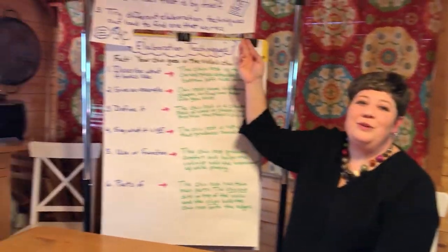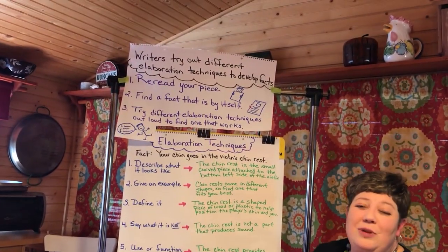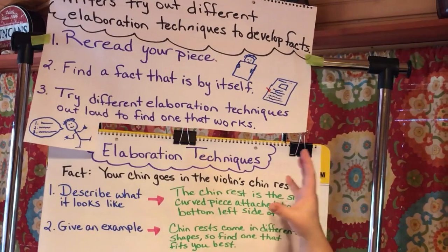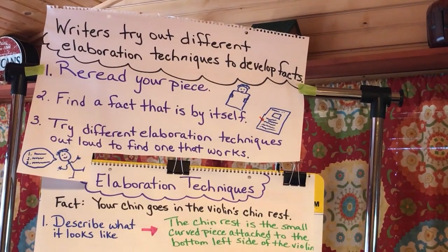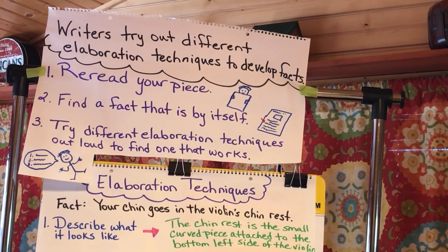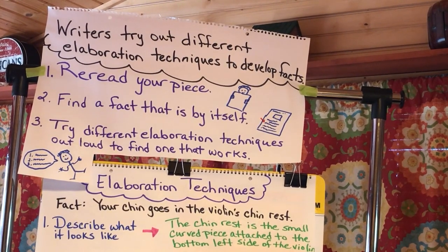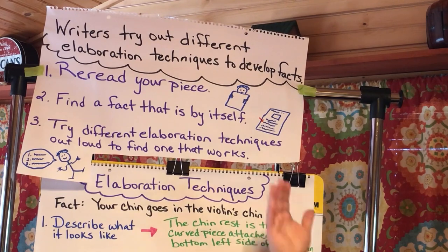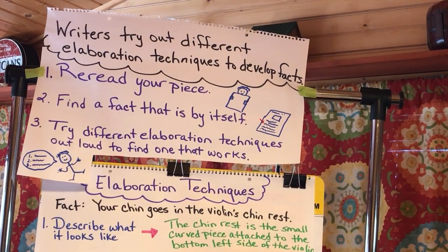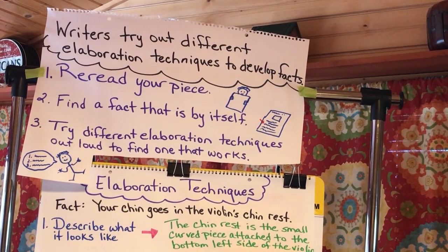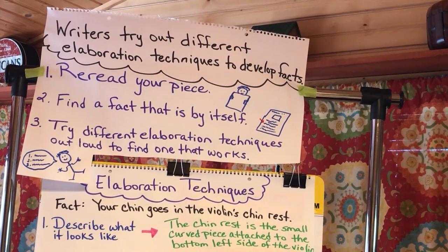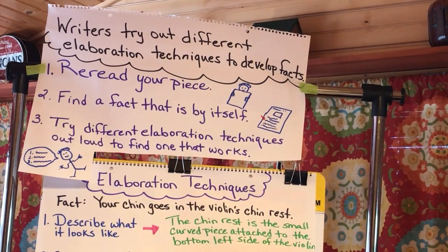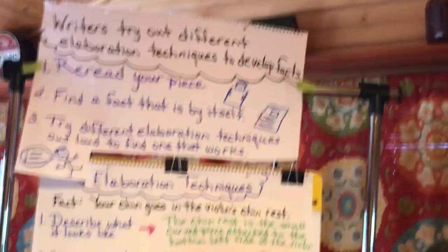I'm going to share with you some steps that you can take in order to find places that you can develop a bit more. Writers try out different elaboration techniques to develop their facts. First, you'll want to reread your piece. Then find a fact that is by itself — it just kind of hangs out there by itself with not a lot of other explanation. Then try different elaboration techniques out loud to find one that works.